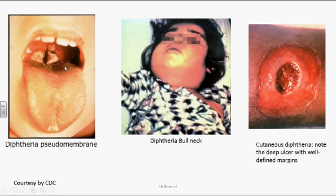Here we can see pictures of the pseudomembrane in the nasopharyngeal areas, inflammatory response, and cervical lymphadenopathy leading to bull neck appearance. This is cutaneous diphtheria producing prolonged non-healing punched-out ulcers with specific margins.